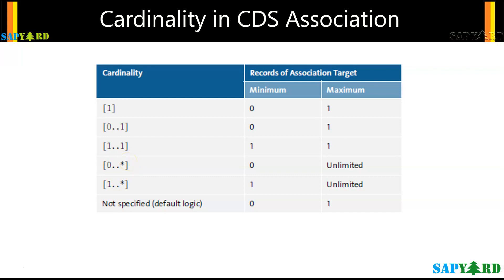To summarize: a single data record of the source CDS view can be related to any number of data records of its association targets, depending on the specified ON conditions. The cardinality is documented with square brackets — for example, [0..1] or [0..*] — where the lower and upper limits describe the minimum and maximum number of data records of the association target.